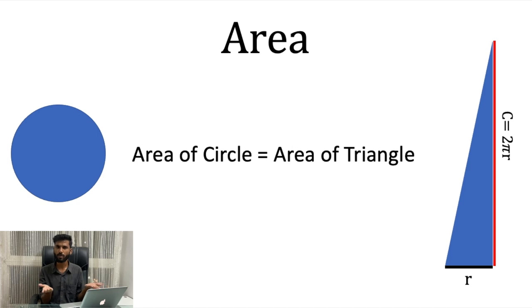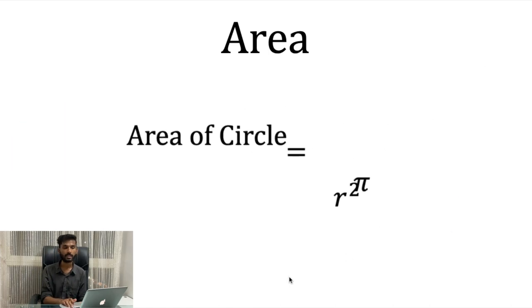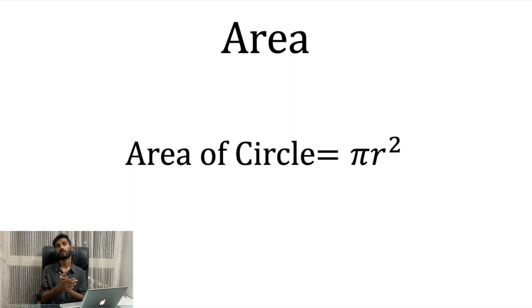Area of a triangle is half into base into height. That is a classical formula for the area of triangle. In this case we know the base is r and the height is 2 pi r. We substitute in the formula, then 2, 2 will get cancelled. R into r will become r square and this is how we will get the area of circle which is pi r square.